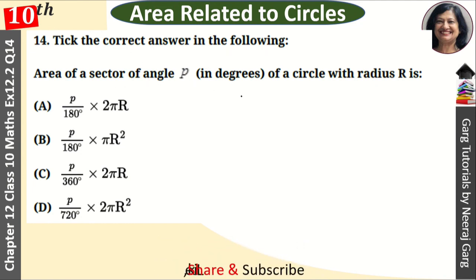Area of sector of angle P in degrees of a circle with radius R is: A, P upon 180 into 2πR; B, P upon 180 into πR²; C, P upon 360 into 2πR; D, P upon 720 into 2πR².